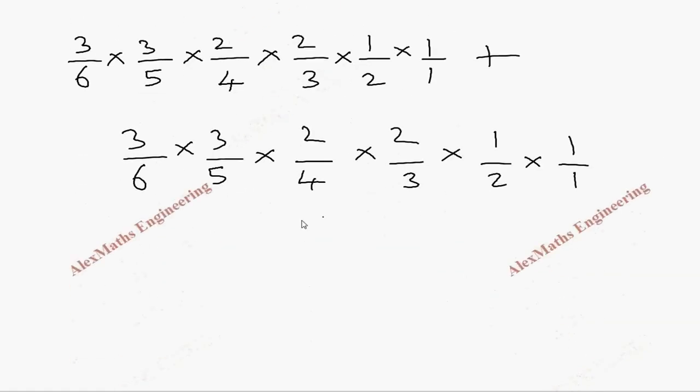So we have to calculate this. Now we see both the terms are same, so it is easier to calculate when I put 2 times and just copy the one term: 3 by 6, 3 by 5, 2 by 4, 2 by 3, 1 by 2, and last is 1.